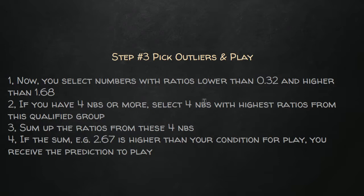You have defined your boundaries: 0.32 is one boundary and 1.68 is the second. You look for numbers having a ratio either lower than 0.32 or higher than 1.68. If you find them — for example a group of six to eight numbers — you sum up the ratios of the four numbers with the highest ratios from this group. If the sum is higher than three, you put them into play.